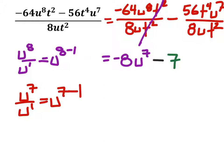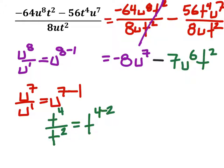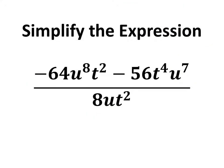And that would give me u to the power of 6. And in addition to that, we have t to the power of 4 divided by... I said 7, I meant t. t to the power of 4 divided by t to the power of 2, which is t to the power of 4 minus 2. And that would give us t to the power of 2 here. And this would be the fully simplified expression. Thank you.